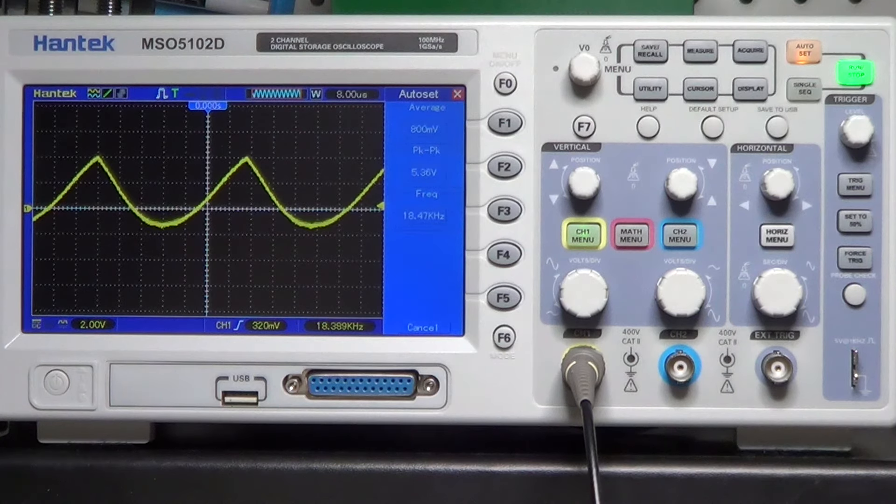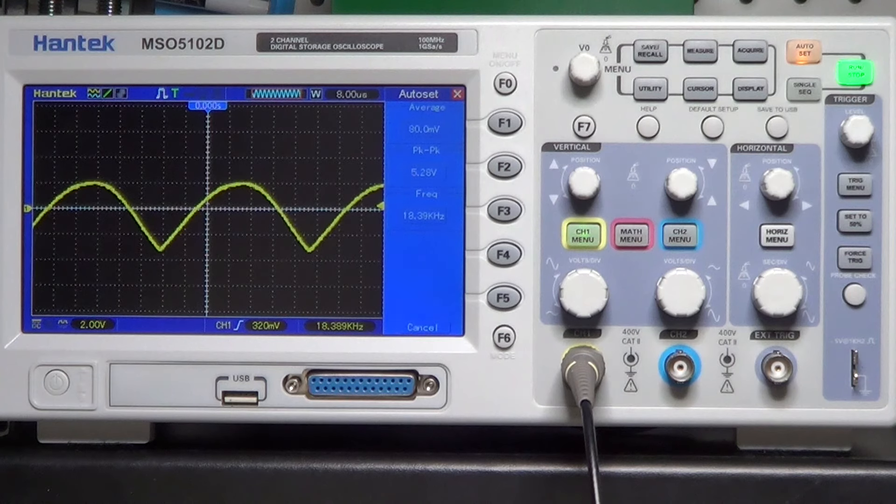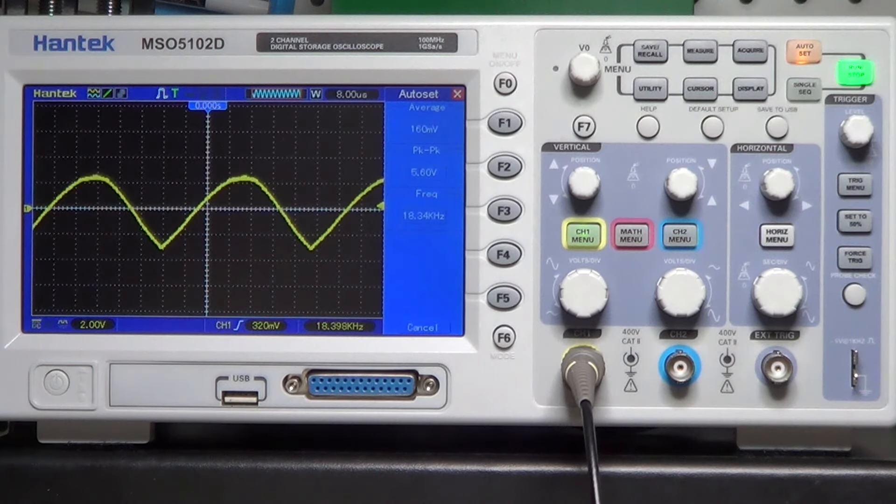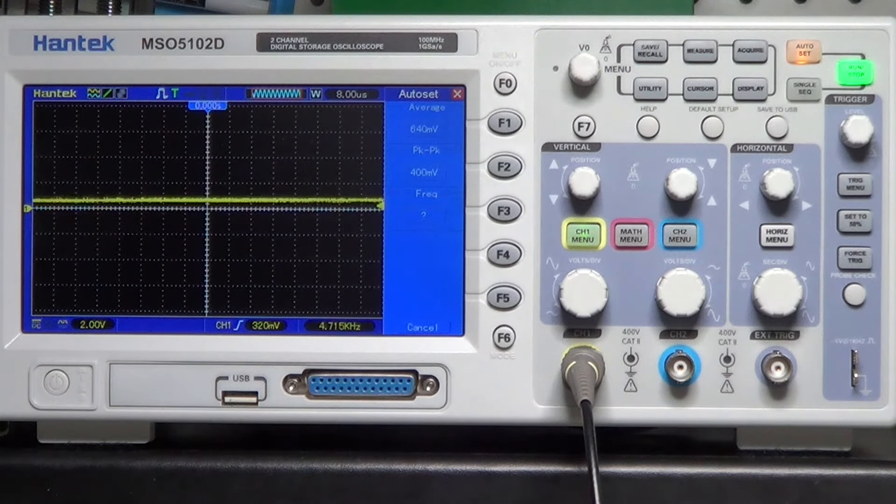Moving now the first trim pot. And you see that it is mainly altering the shape at the top of the wave, making it more or less pointy. And of course, moving the second trim pot, we can change the shape on the bottom part of the wave. Let me put it back so we can see a nice sine wave again. And now let's go all the way down with the frequency by acting again on the potentiometer.